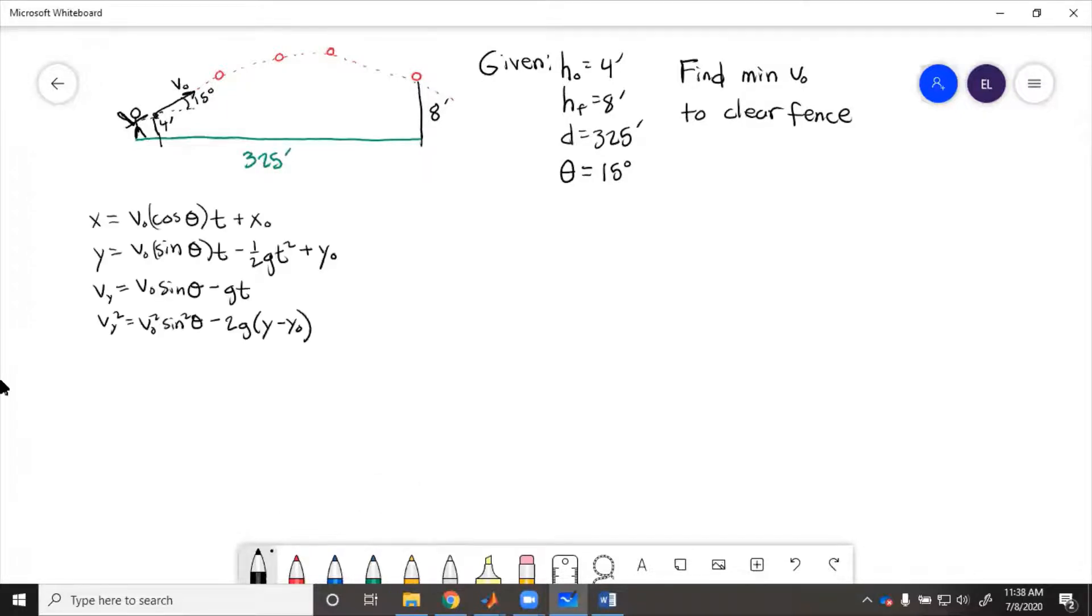We know that the point that it has to reach is x, y. We can find that point because we know it's 325 and 8. And then the starting point, x initial, y initial, we can also find. So if we know x initial, y initial, x, y, and theta, we have to find v initial.